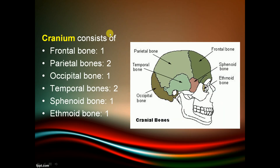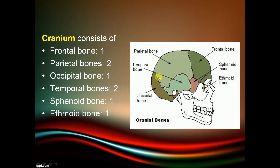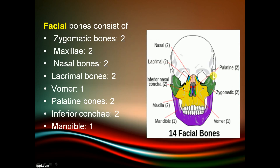The cranium consists of eight bones: one frontal bone, two parietal bones, one occipital bone, two temporal bones, one sphenoid bone, and one ethmoid bone. These eight are your cranium bones.